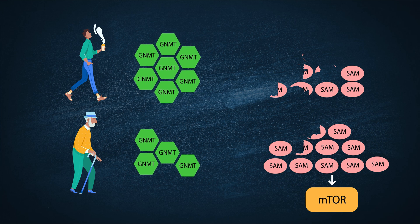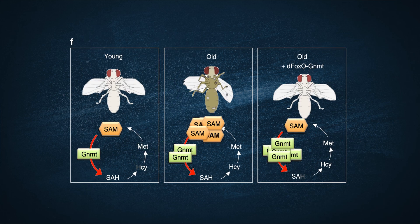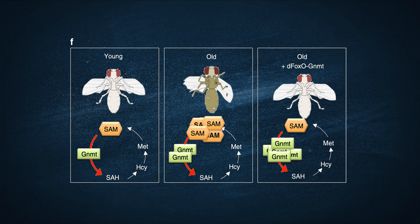The scientists confirmed this by introducing a mutation in the gene that codes for GNMT so that it becomes overexpressed, showing that the fruit flies that had this mutation regained their young phenotype, even in their old age, as the mutation that overexpressed GNMT helped prevent the accumulation of SAM and chronic mTOR activation.